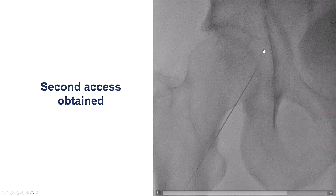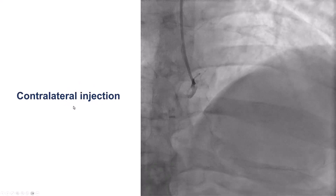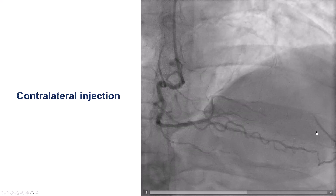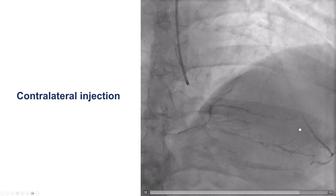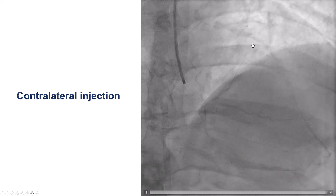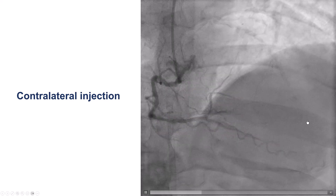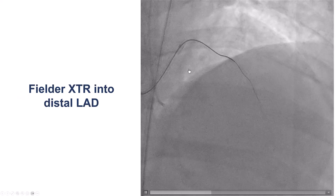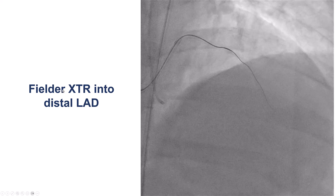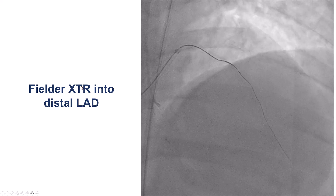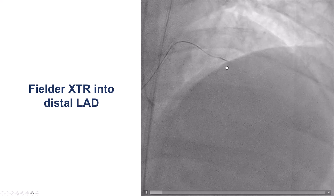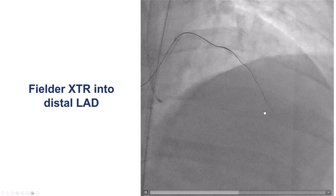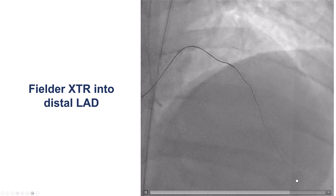We obtained another access and did a contralateral injection to visualize where our guide wire was going, and we saw that the distal vessel was actually filling through the right coronary artery. We tried again with a Fielder XTR, a polymer-jacketed wire through a microcatheter, and we were now able to advance this wire into the distal LAD.